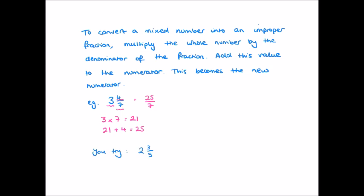So before we move on, I'd like you just to pause the video and have a go at converting 2 and 3 fifths into an improper fraction. So you should have done 2 multiplied by 5. That's the integer, the whole number part, multiplied by 5, the denominator, and that's equal to 10. Then you take this 10 and you add it to the numerator part. So that's 3 and 10 plus 3 is 13. So 13 forms the numerator of our new fraction, but the denominator 5 remains unchanged. And we see that 2 and 3 fifths is equal to 13 fifths.